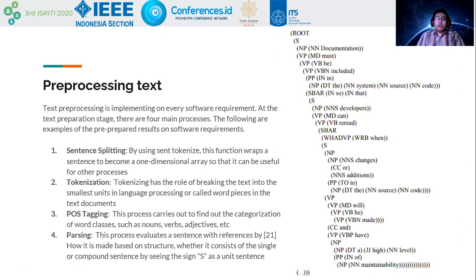From text preprocessing, we implement this on every software requirement. At the text preprocessing stage, there are four main processes: sentence splitting, tokenization, POS tagging, and parsing.